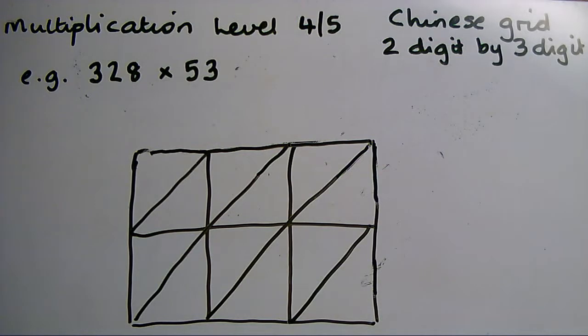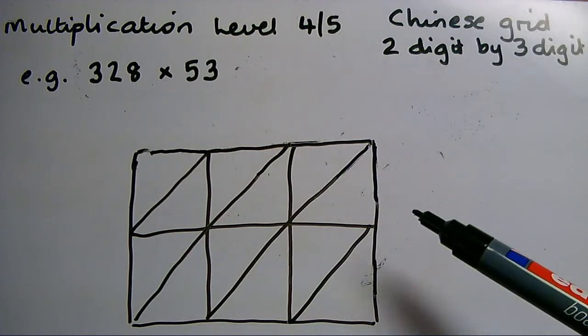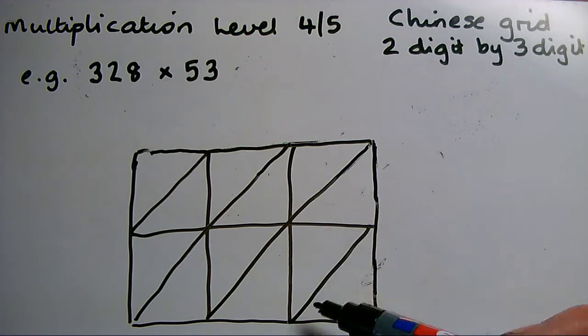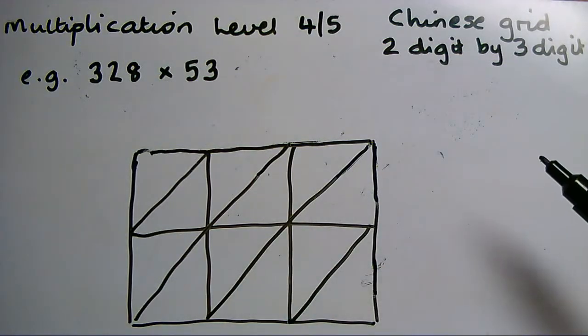This is called Chinese grid method. The grid for it is similar to the normal grid multiply, except that there are diagonals drawn across each square. I'm not going to let that worry me when I start setting out the number.